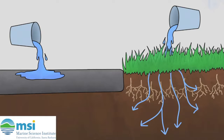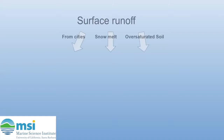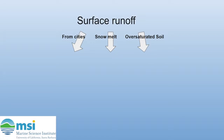So where does this water go? In urbanized areas, such as cities or neighborhoods, water flows off of impervious surfaces and into drains, which eventually lead to bodies of water. In areas with less development, water can flow into streams, which eventually leads to lakes or oceans.